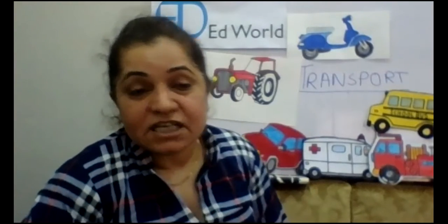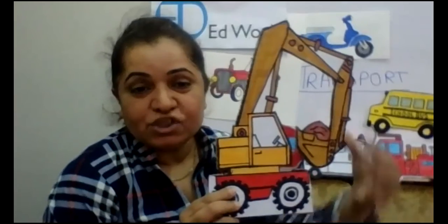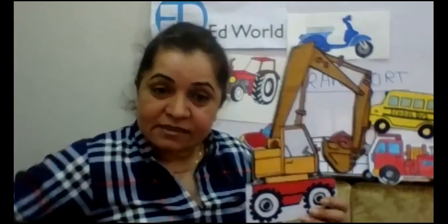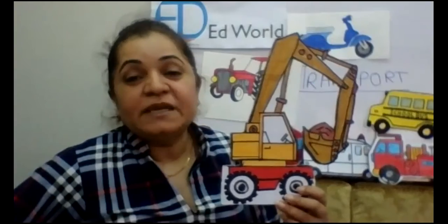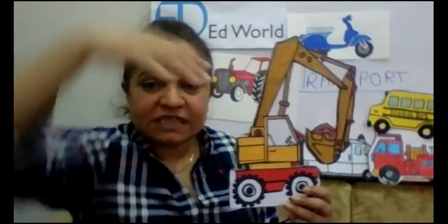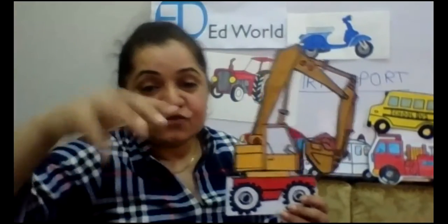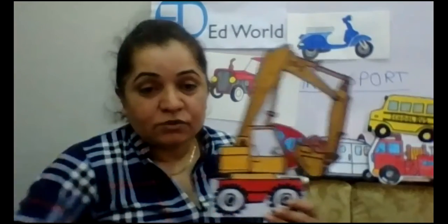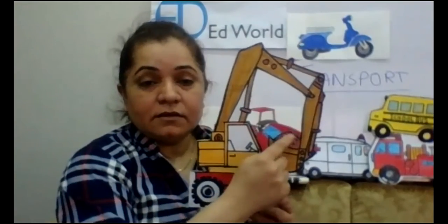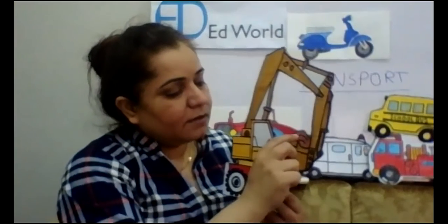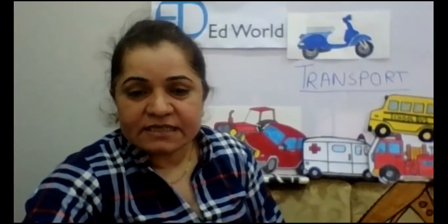At a construction site, you can see many different kinds of transport. One of them is an excavator, which digs the ground and makes holes. If someone is building a high-rise building, they need to excavate the ground first to create a strong base — digging the hole and then building the foundation inside it.